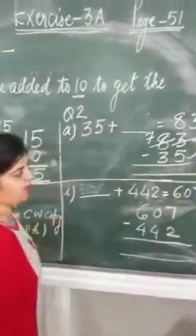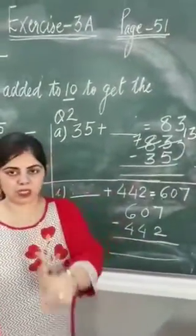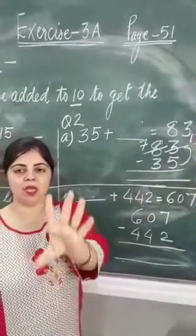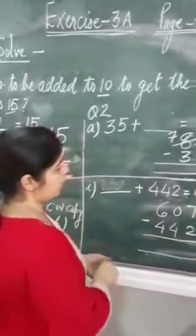13 minus 5. We will start counting after 5 till 13. 6, 7, 8, 9, 10, 11, 12, 13. So, how many fingers? 8 fingers.